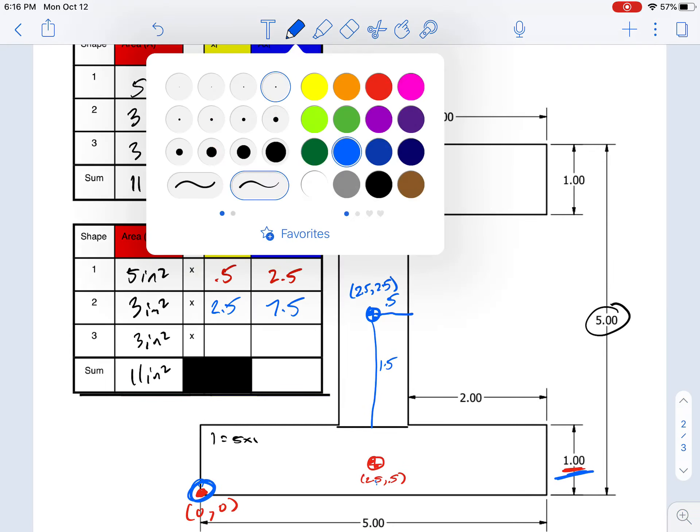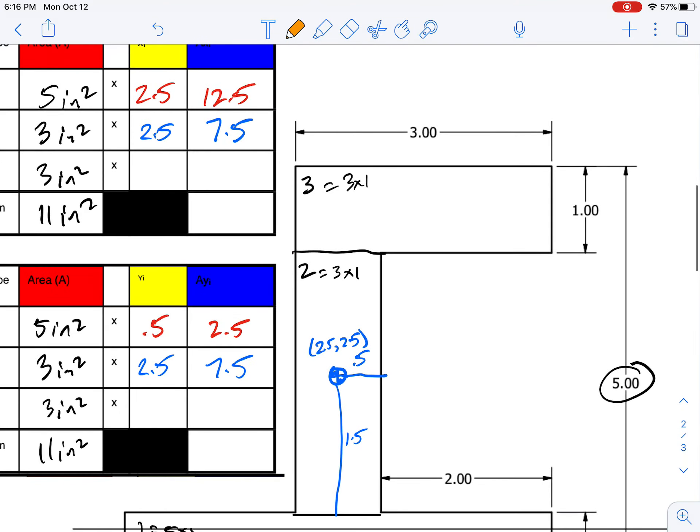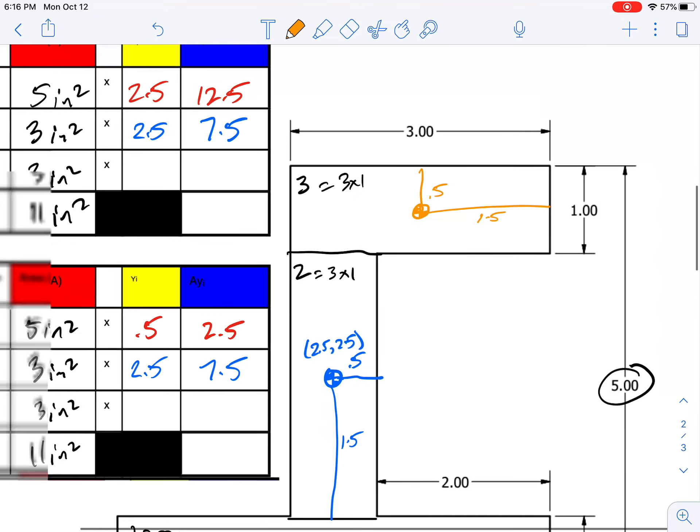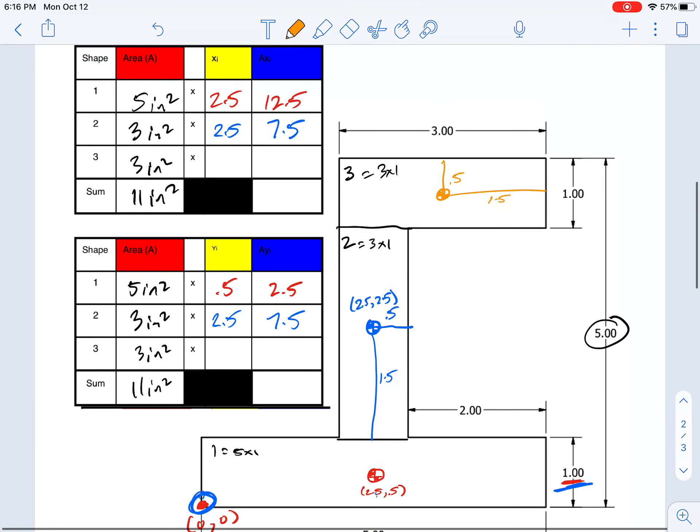Finally, the top shape. The centroid's right in the middle of the rectangle. This distance is 0.5 away from the top, and this distance is 1.5. Instead of adding up all these distances, I'm going to say this 5 is the overall width minus the 1.5, so my x location is 3.5.